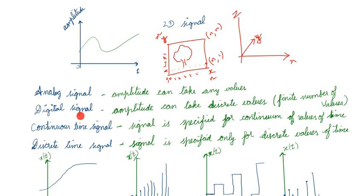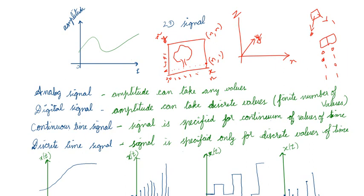What about a digital signal? The amplitude can take only discrete values — a finite number of values. For example, with one bit, you can store only 0 or 1. With two bits, you can store 00, 01, 10, or 11 — only four values. So for digital signals, the amplitude takes only a finite number of discrete values.